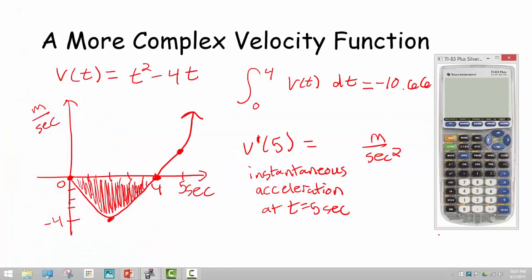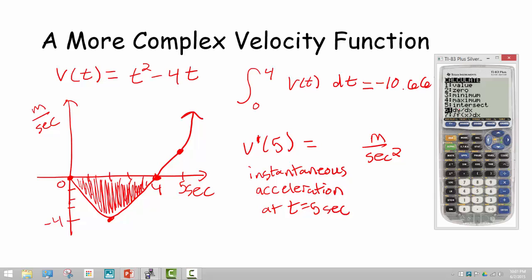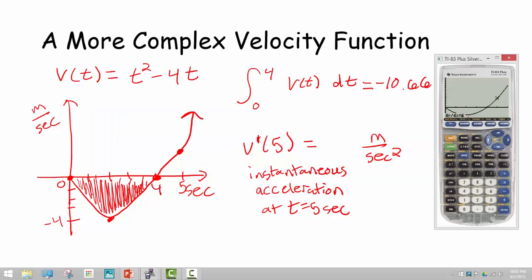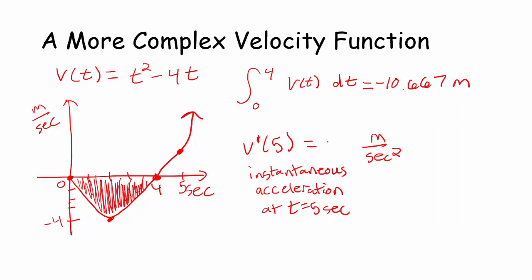Let me get rid of the shading first. Going into second trace, I pick dy/dx — the differential change in y over the differential change in x, the instantaneous slope at any given moment. I type in a t value of 5. dy/dx equals 6. That means at 5 seconds, the slope of the curve right there is 6. The acceleration at 5 seconds is 6 meters per second squared.